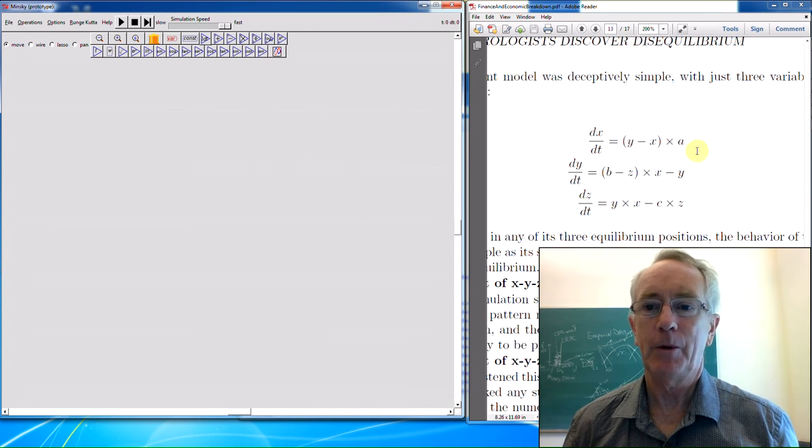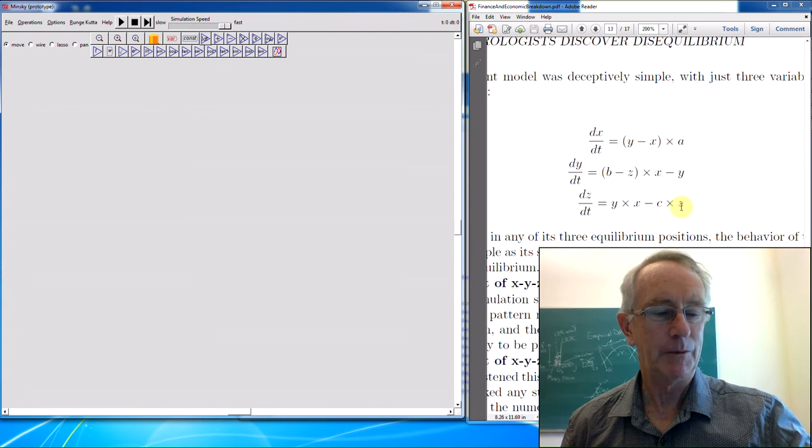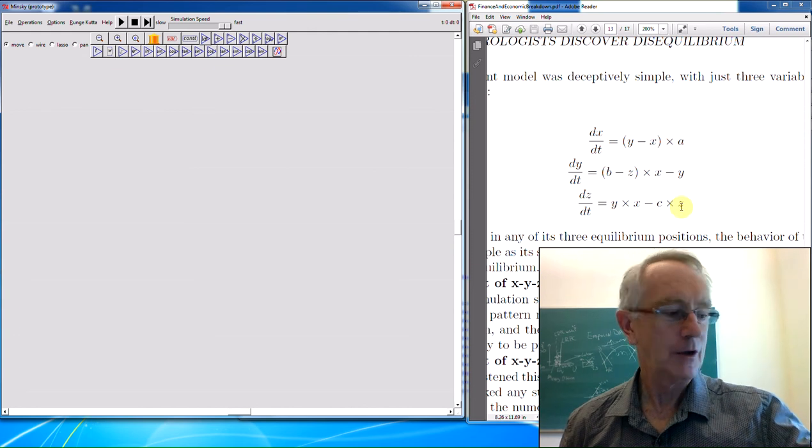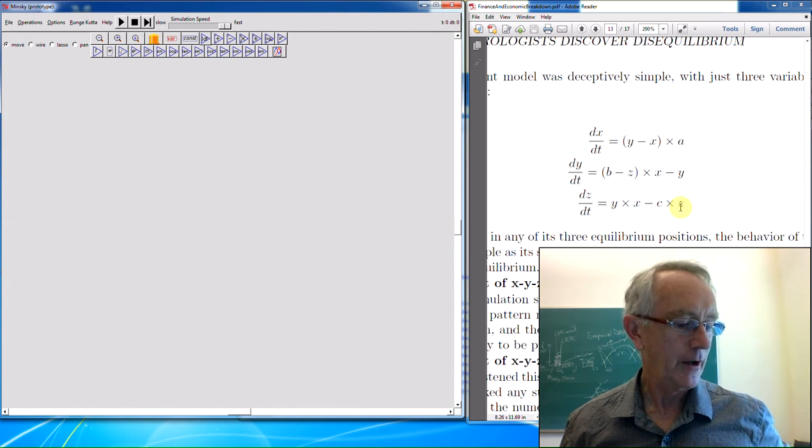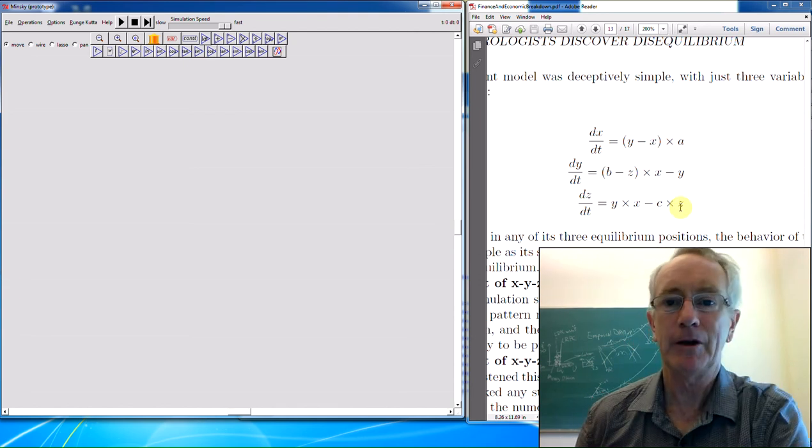This is the Lorenz set of equations over here that describe turbulent flow in an extremely stylized model of a weather cell. This was the basis of meteorology moving from linear equilibrium analysis to non-linear complex systems analysis way back in the 1960s.